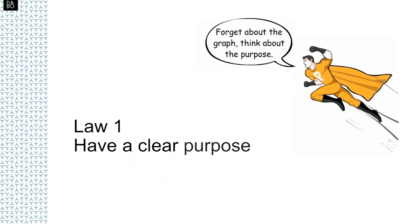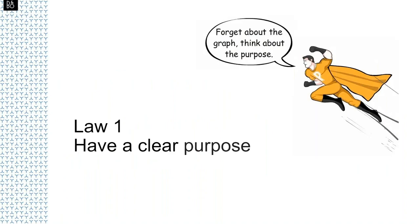Law one: have a clear purpose. This first law is really advanced common sense — it follows typical planning questions such as why, what, who, and where. Why do I need a graph and what is its purpose? Is it to explore data or to deliver a message? What evidence is available to support this purpose — datasets, new experiments, simulations? Who is my intended audience — specialists, non-specialists, or both? And the where: where will I publish and what are the constraints?